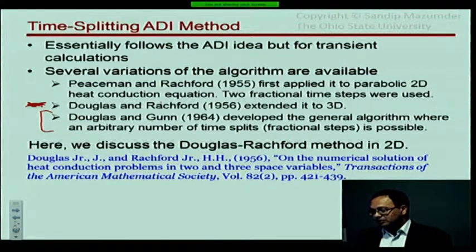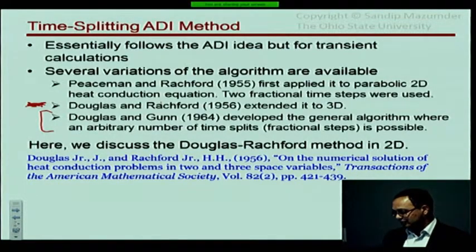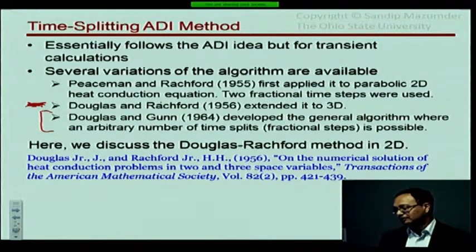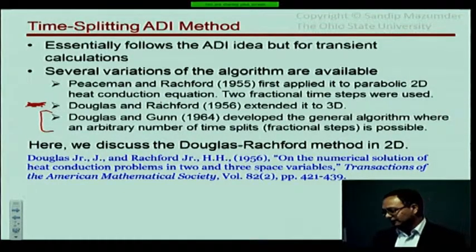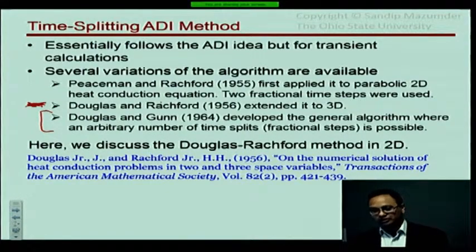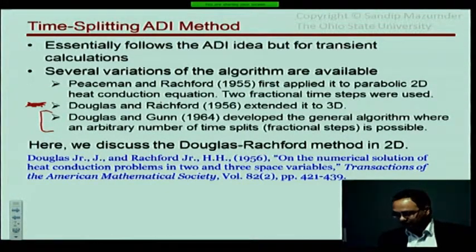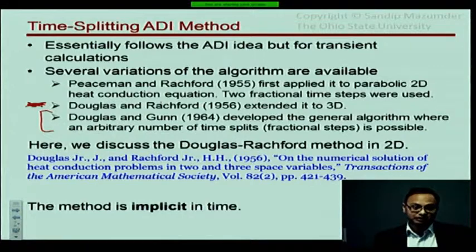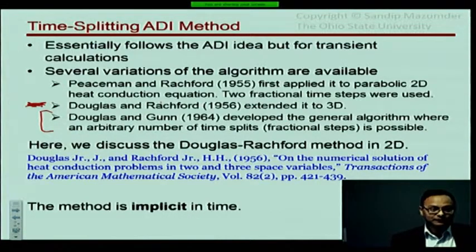Here is the original reference. The title says 'On the numerical solution of heat conduction problems in two and three space variables.' It is published in Transactions of the American Mathematical Society. The method is implicit in time—it is not an explicit method.